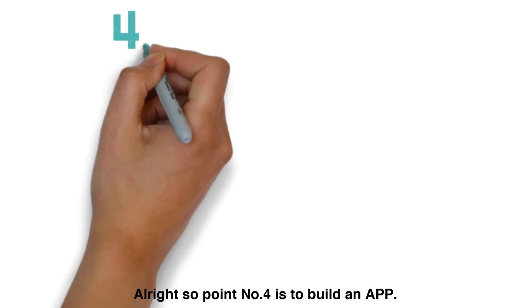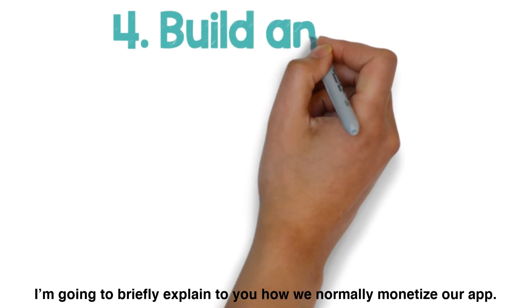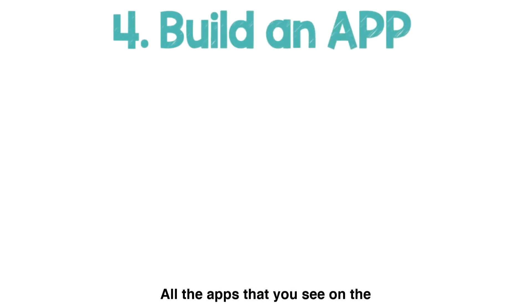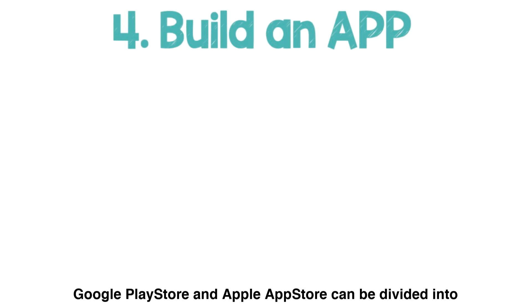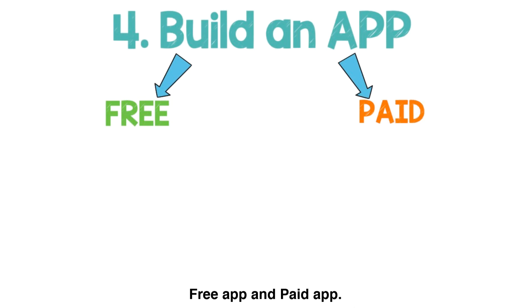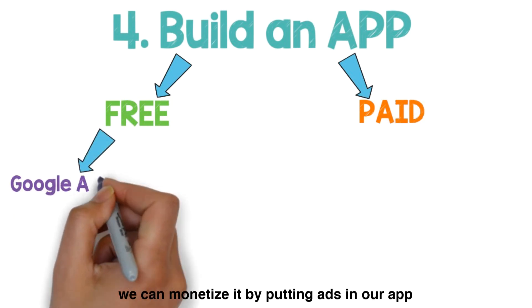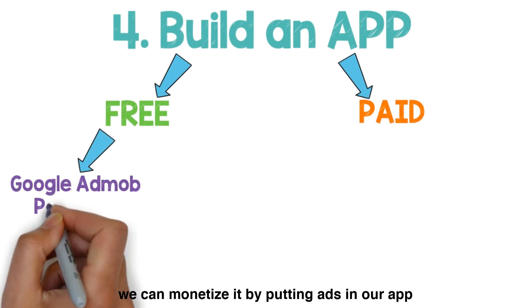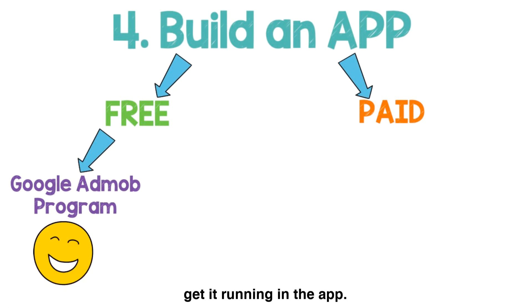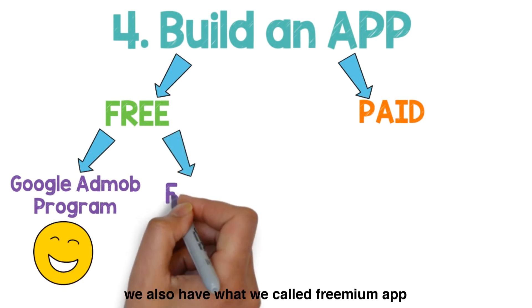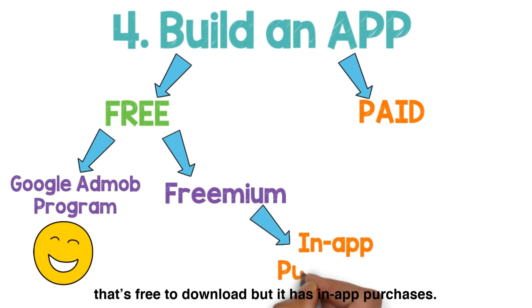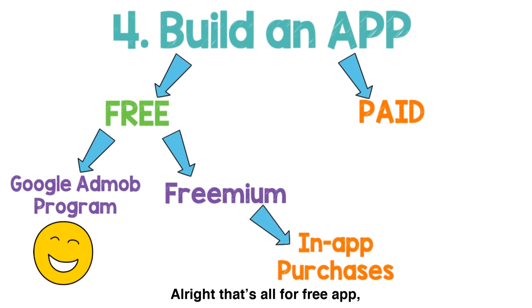Point number four is to build an app. All the apps you see on the Google Play Store and Apple App Store can be divided into two categories: free apps and paid apps. For free apps, we can monetize by putting ads through Google AdMob, which is very easy to sign up and get running. Besides that, we also have what we call freemium apps, which are free to download but include in-app purchases.